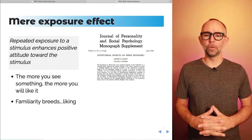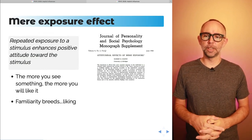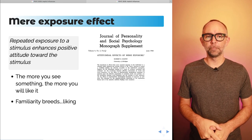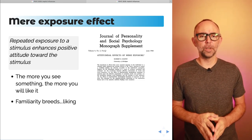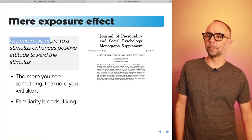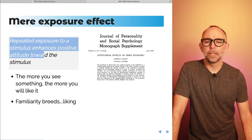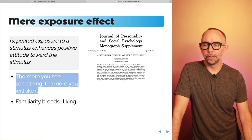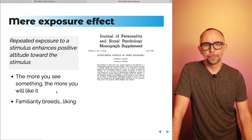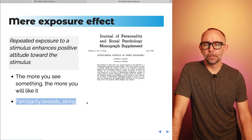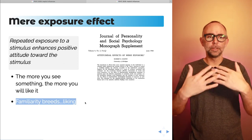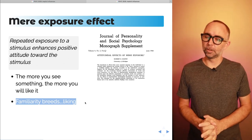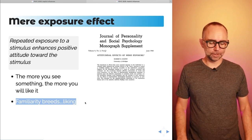The Mere Exposure Effect was reported in June of 1968 by psychologist Robert Zajonc in a paper called 'Attitudinal Effects of Mere Exposure.' The short takeaway: it's the finding that repeated exposure to a stimulus enhances positive attitude toward that stimulus. Basically, the more you see something, the more you will like it. Another way of putting it: familiarity breeds liking. The more you experience something, the more familiar it becomes, and you'll have a bias toward positively evaluating it.